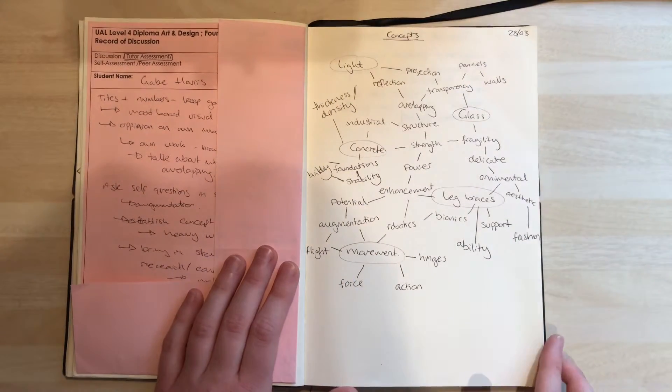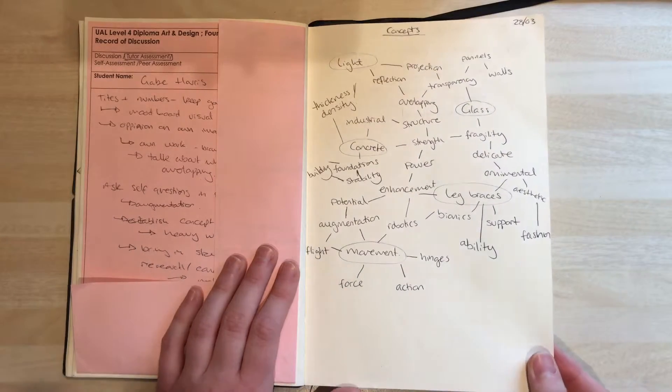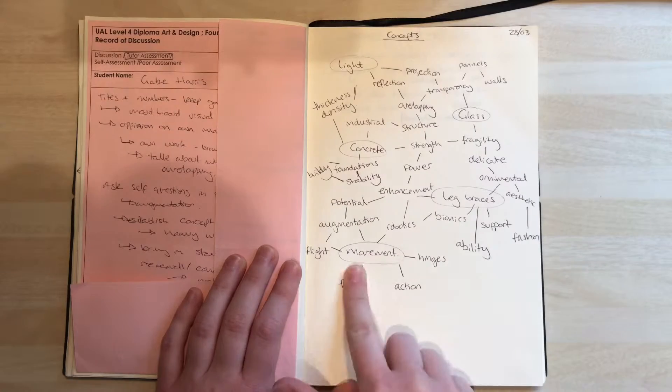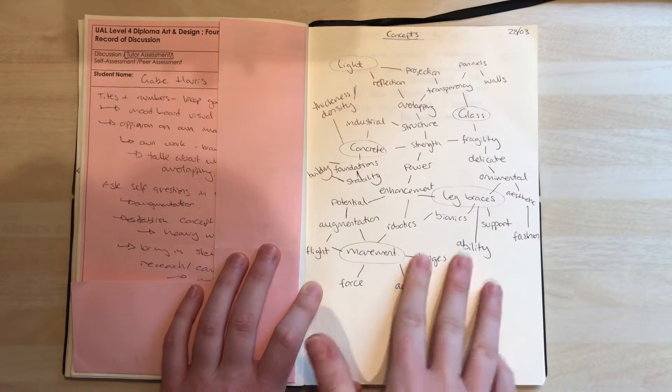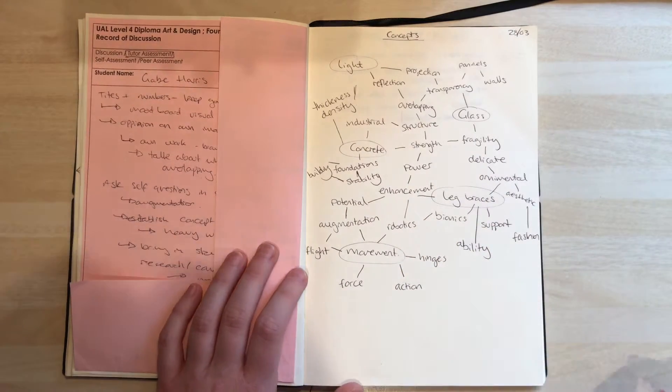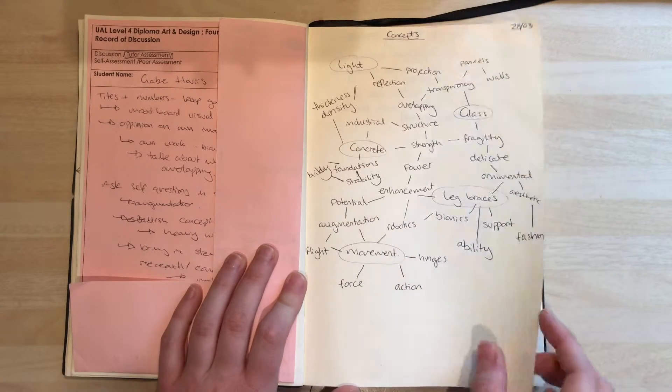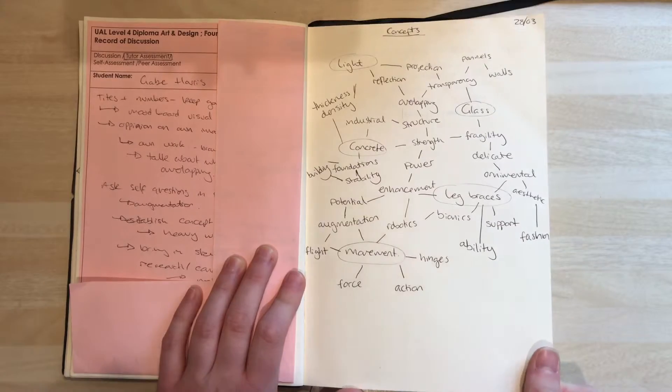This is a final concept map, so taking the light, glass, concrete, leg braces, and movement that I want to look at and working ways between them, figuring out different linking phrases and showing my thought process between these five things.